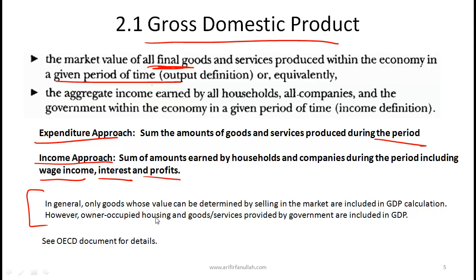As a general point — important for exam questions — only goods whose value can be determined by selling in the market are included in GDP calculation. However, there are a couple of exceptions: owner-occupied housing is also added in GDP, and goods and services provided by governments are also included, even though there isn't a formal market. If the government is providing a service, that service is monetized and included in GDP.